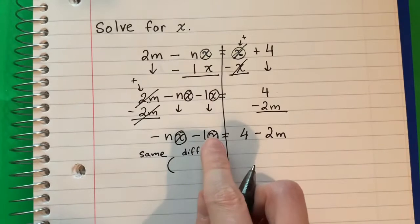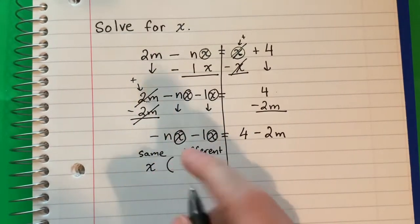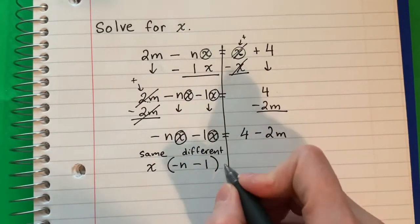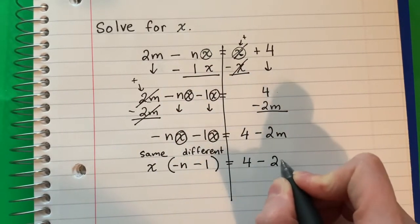What is the same here? x. So I'm going to put x here. Copy minus n minus 1. Those are different. Equals. Copy 4 minus 2m.